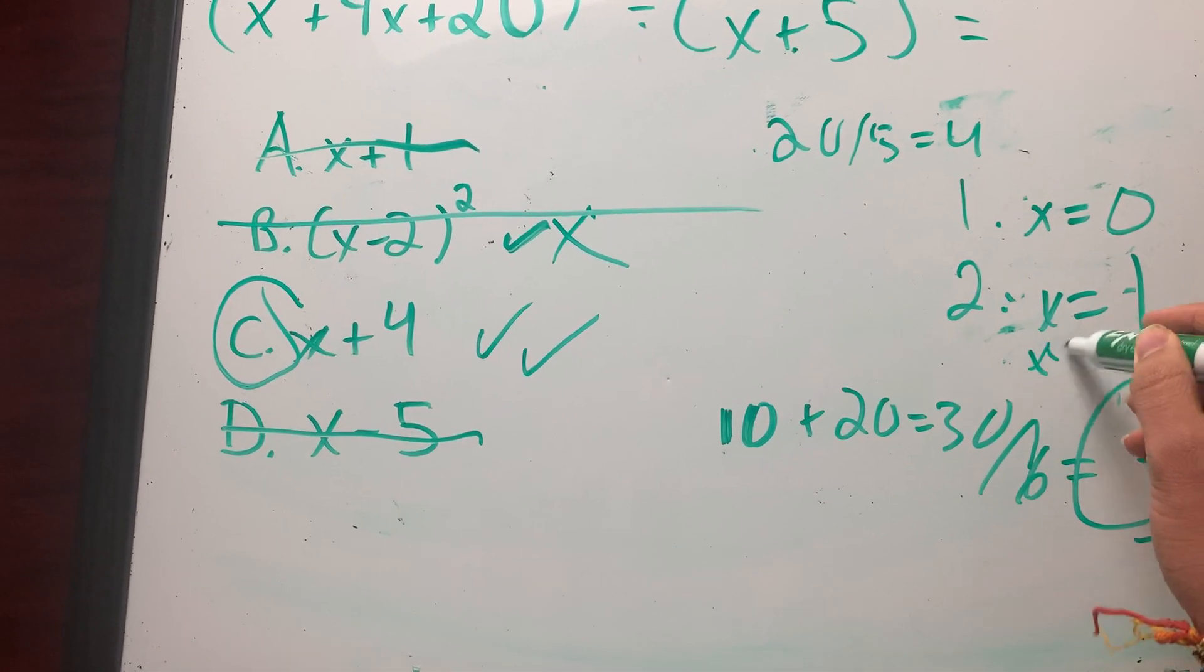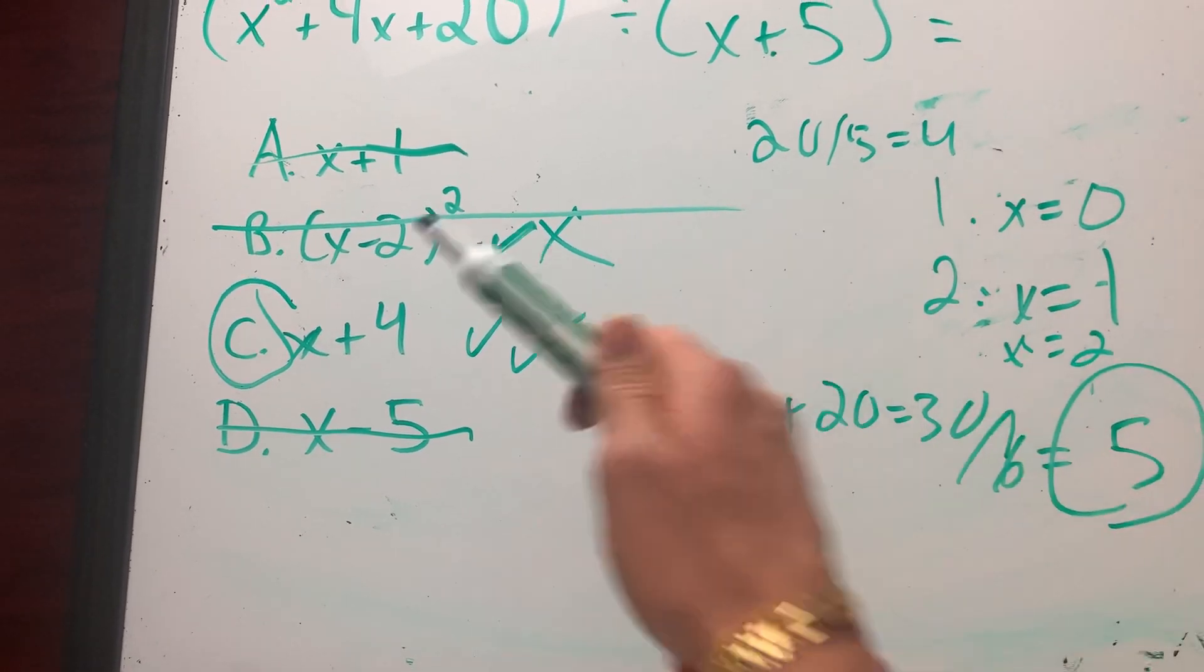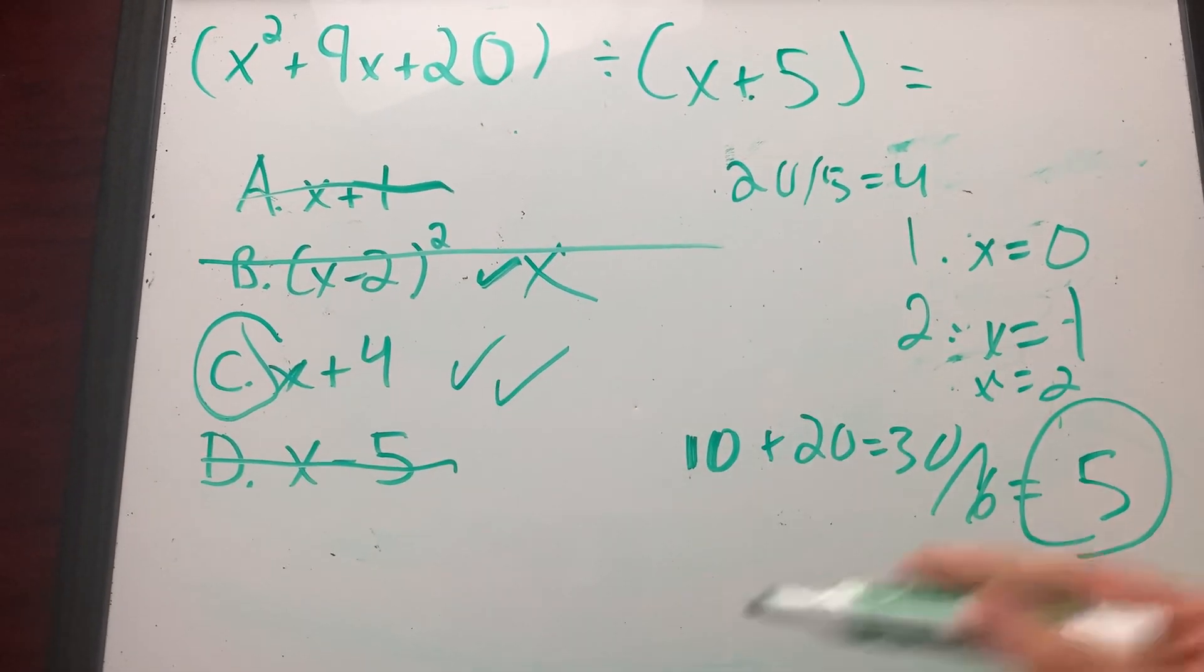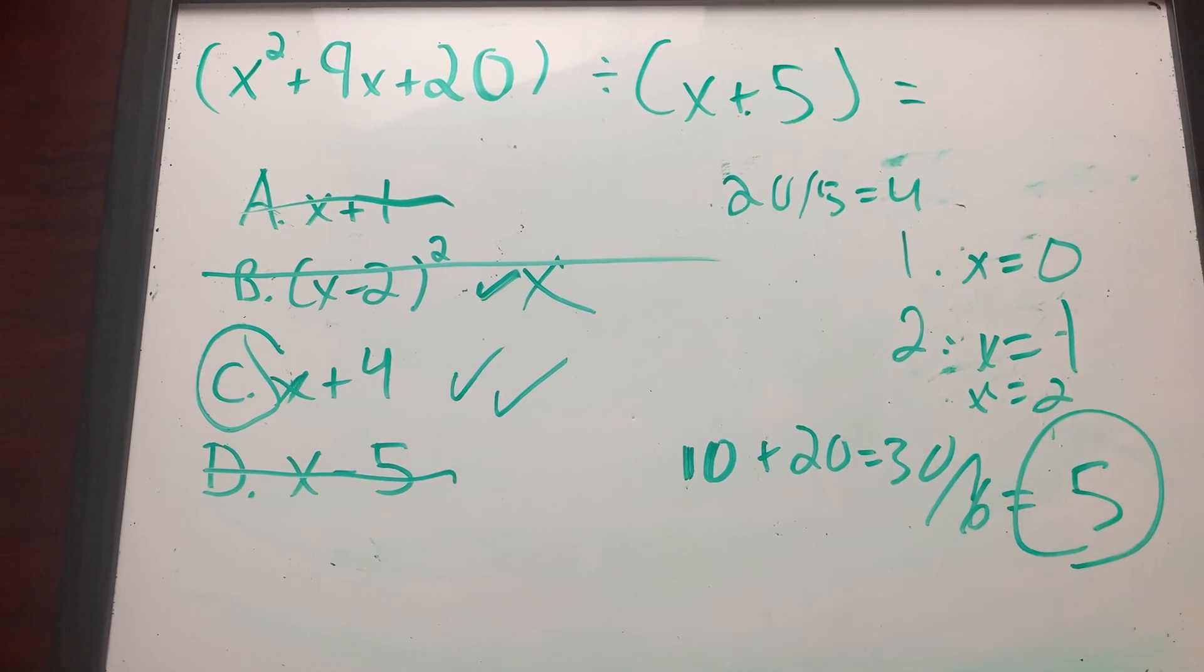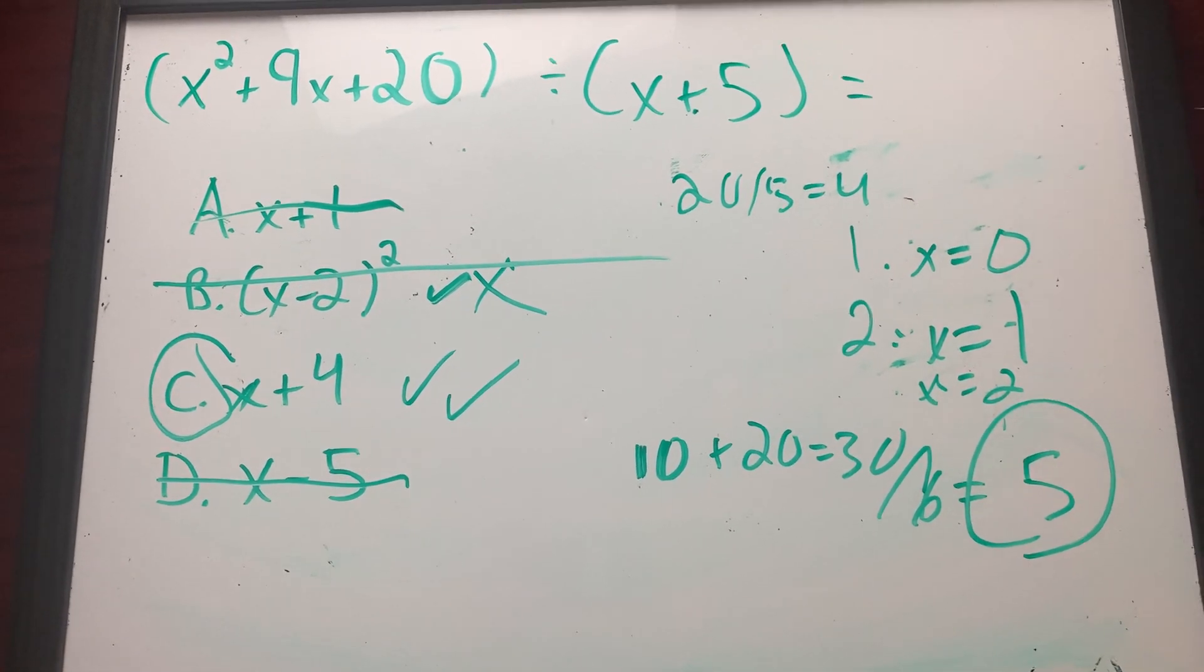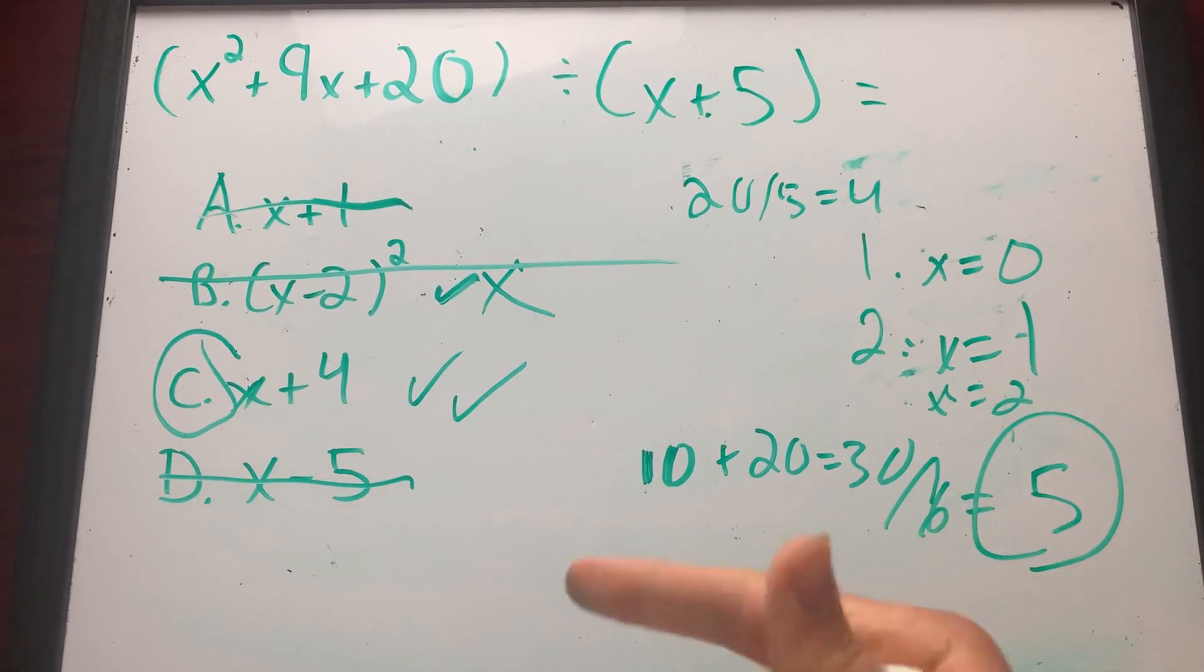And you can keep going to x equals two, x equals three, until you only have one choice left. And all you have to do is select that choice as your answer and you can move on. That's it. That's how you solve these super hard division problems. You do not need to learn long division for the SAT. You can just do this and you're done. So thank you guys for watching.